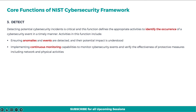The third function is Detect. Detecting potential cybersecurity incidents is critical, and this function defines the appropriate activities to identify the occurrence of a cybersecurity event in a timely manner. Activities in this function include: ensuring anomalies and events are detected and their potential impact is understood; and implementing continuous monitoring capabilities to monitor cybersecurity events and verify the effectiveness of protective measures, including network and physical activities.